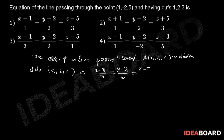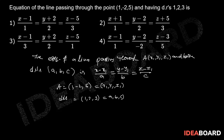equals Z minus Z1 by C. Here, the given point A is (1, minus 2, 5), that is X1, Y1, Z1, and the direction ratios of the line are 1, 2, 3, that is A, B, C. Therefore, the required equation of the line is: X minus 1 by 1 equals